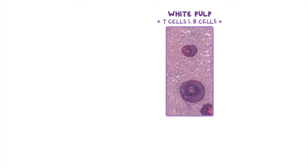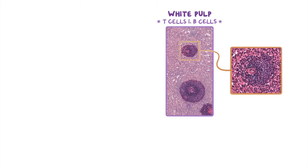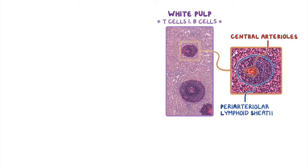The trabecular arteries from the previous image branch even more and become central arterioles. Each central arteriole is surrounded by a periarteriolar lymphoid sheath, or PALS for short, which is a cylindrical mass or sheath of mostly mature T cells that surrounds the central arteriole.